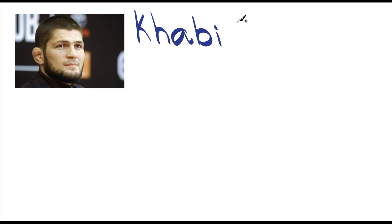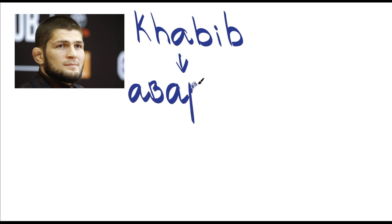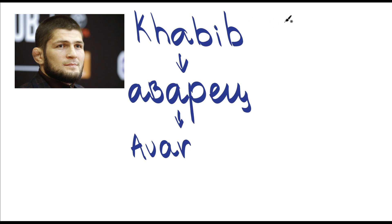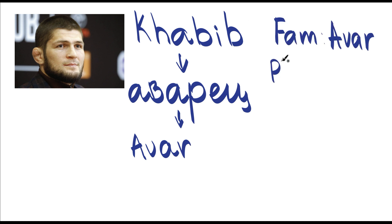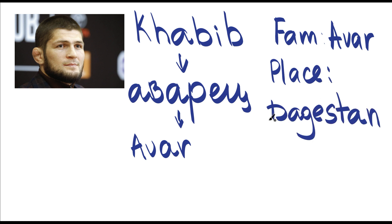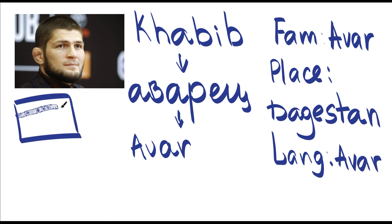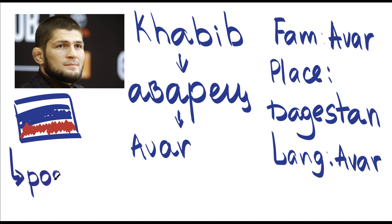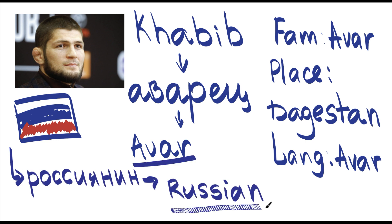And this is Habib. Habib — аварец — means that he is from Dagestan, and his ethnicity is Avar. In his region, people have their own traditions, history, and pride. So Habib не русский — he is not Russian, he is Avar. But Habib живет in Russia. He lives in Russia. He is Russian. So he is Russian Avar.